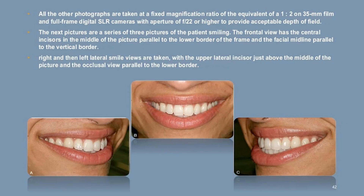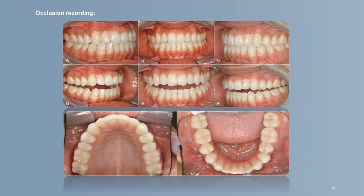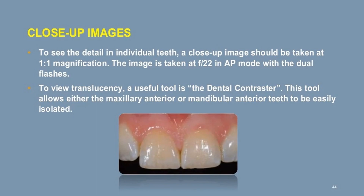The next pictures are a series of three smiling photographs: the frontal view has the central incisors in the middle of the picture parallel to the lower border, with the facial midline parallel to the vertical border; right and left lateral smile views are taken with the upper lateral incisor just above the middle and the occlusal plane parallel to the lower border. Occlusion recording and close-up images show detail in individual teeth at 1:1 magnification at f/22 in aperture priority mode with dual flashes. To view translucency, the dental contrastor tool is used to easily isolate maxillary or mandibular anterior teeth.